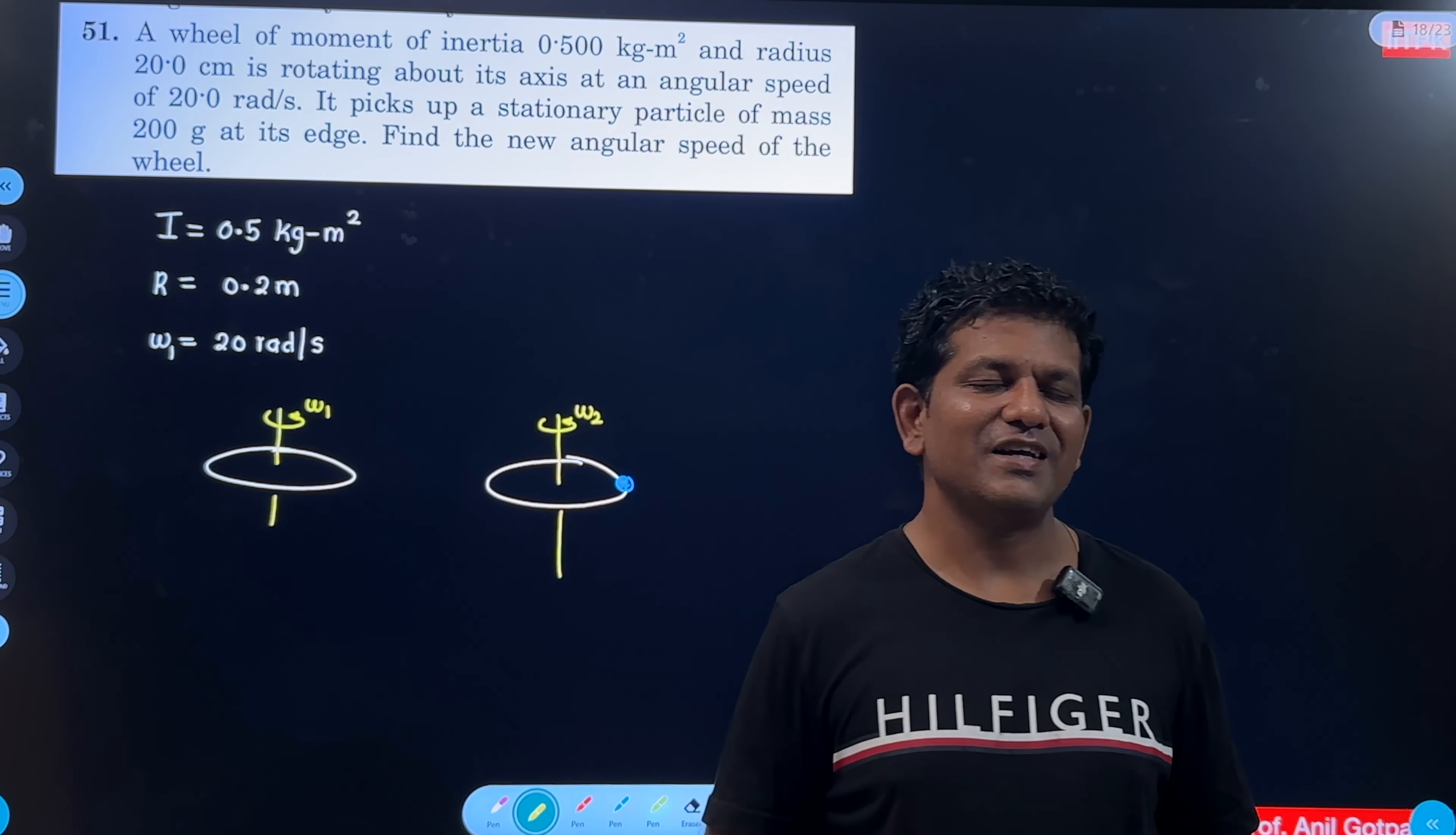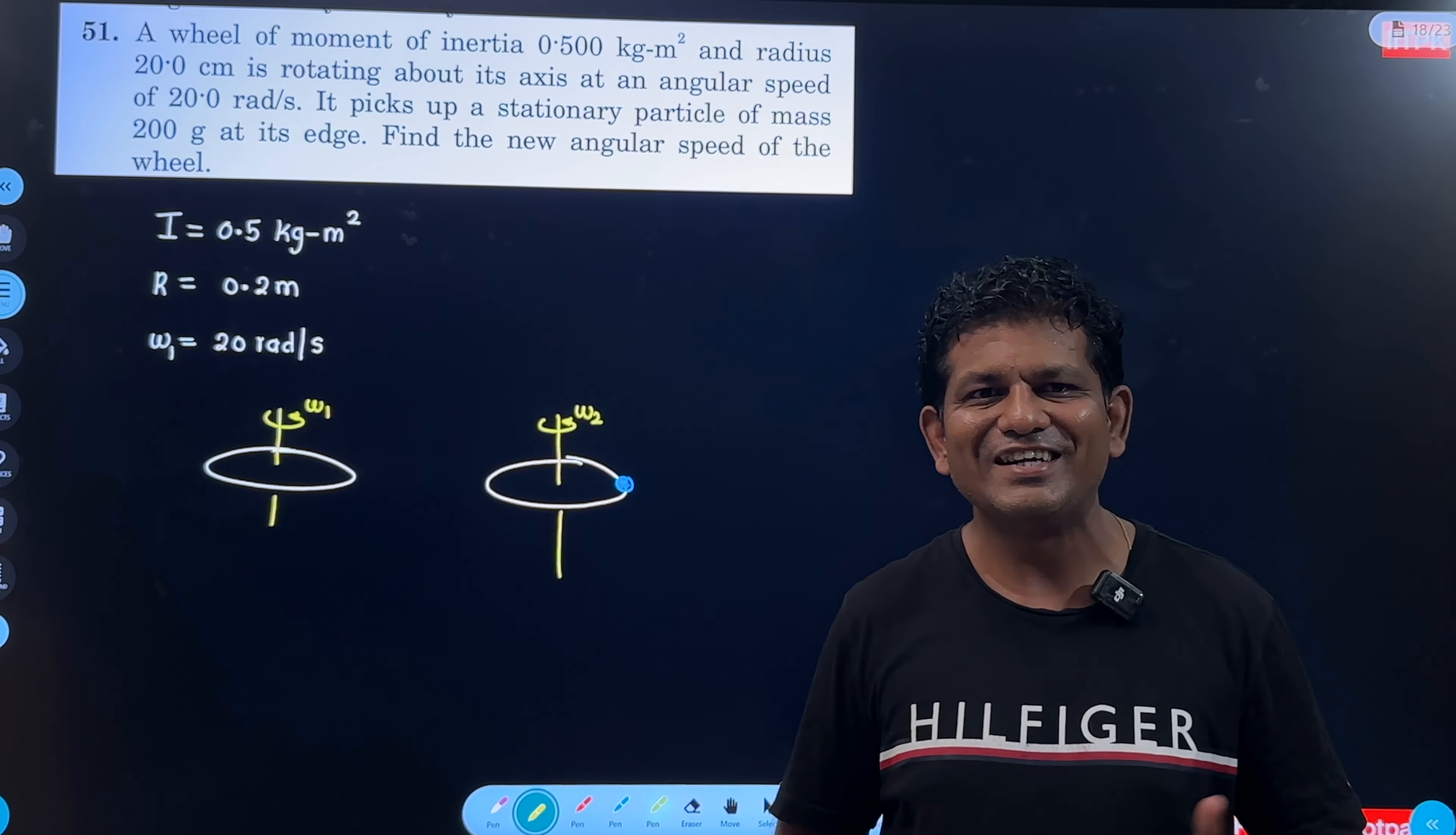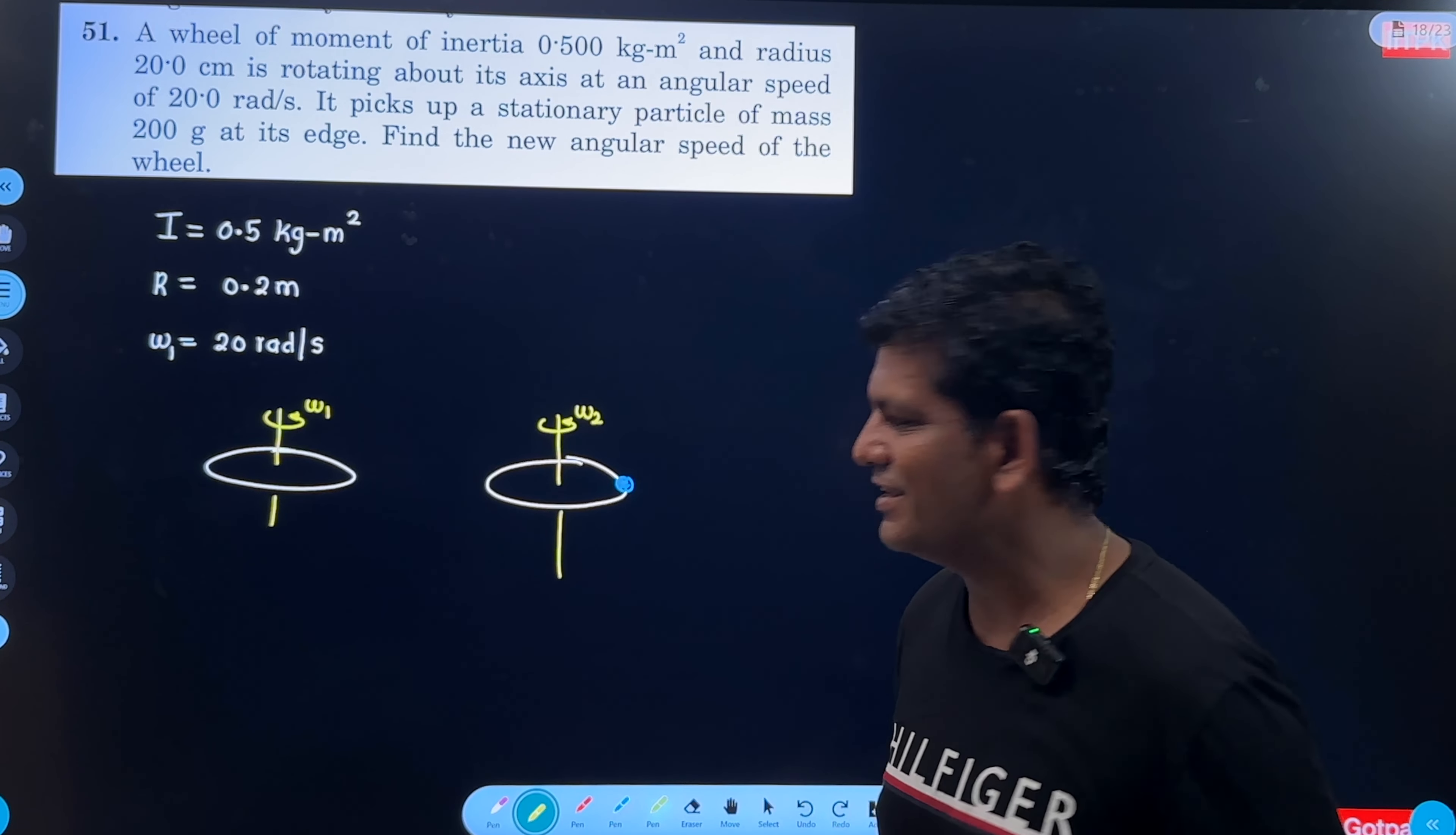First, this wheel was just a wheel and then the wheel plus mass, the moment of inertia system has increased. So obviously, omega will decrease. There is no external torque acting on the system. This is why angular momentum will be conserved.